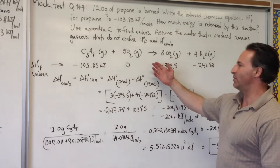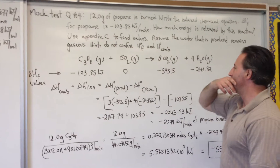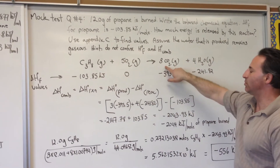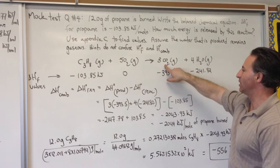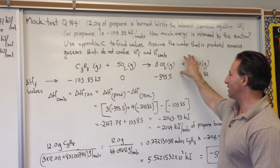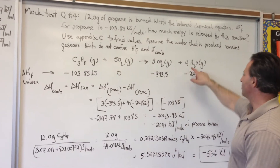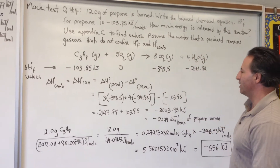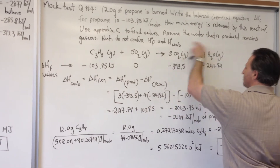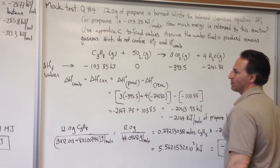When you balance combustion equations, proceed alphabetically: balance the carbon, then the hydrogen, then the oxygen. There are three carbon atoms in the propane molecule, so we put three carbon dioxides, since the only carbon on the right-hand side is in the form of CO₂. There are eight hydrogen atoms in propane, so we put four waters. Then for oxygens: six plus four gives ten oxygens total, so we put five O₂ on the left. Now we have a balanced equation.